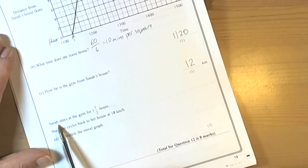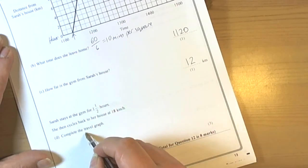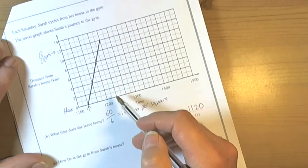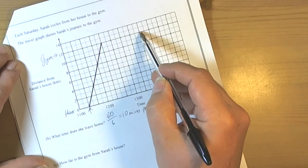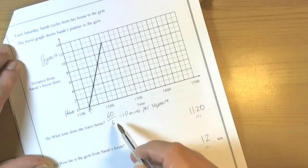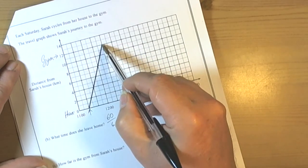The next part of the question wants you to give some information to then complete the travel graph. So she stays at the gym for one and a half hours. Well on a travel graph if you're staying still then obviously the distance isn't changing but time is still moving forward. So that will create a horizontal line. She's staying for one and a half hours. Well one and a half hours is the same as 90 minutes. And as the scale of the graph was every square was 10 minutes, then 90 divided by 10 is going to be 9 squares.